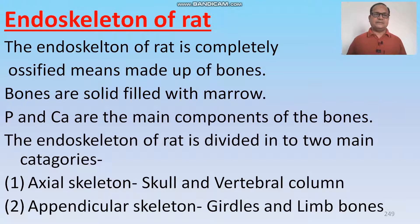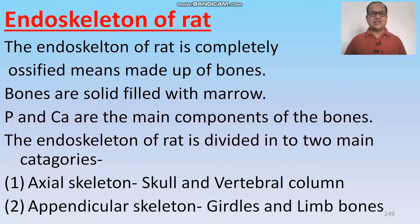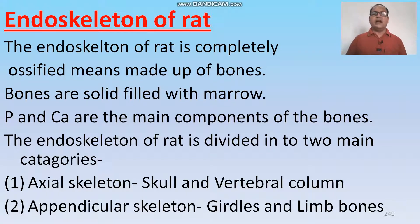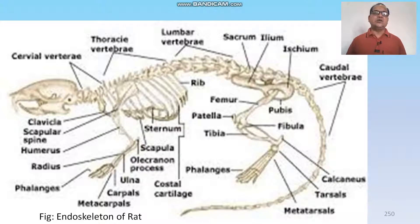Now the endoskeleton of rat. The endoskeleton of rat is completely ossified, meaning made up of bones. Bones are solid and filled with bone marrow. Phosphorus and calcium are the main constituents of the bone. The endoskeleton of rat is divided into two main categories: axial endoskeleton and appendicular skeleton. Axial endoskeleton includes the skull, vertebral column, ribs and sternum; appendicular skeleton includes the girdles and limb bones. This is the articulated skeleton of a rat.